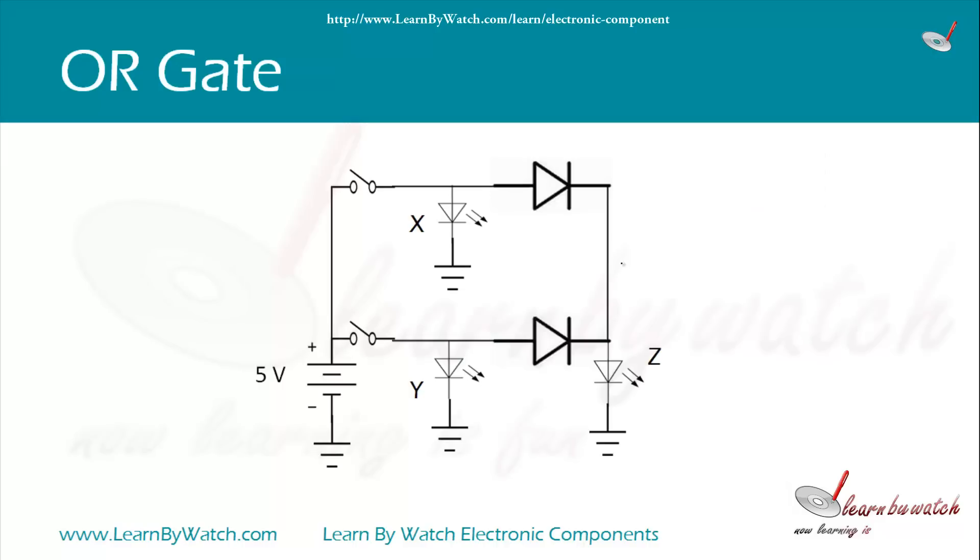This is a circuit of OR gate using diodes. We have taken a 5V battery here to provide inputs. The inputs are controlled by these switches.